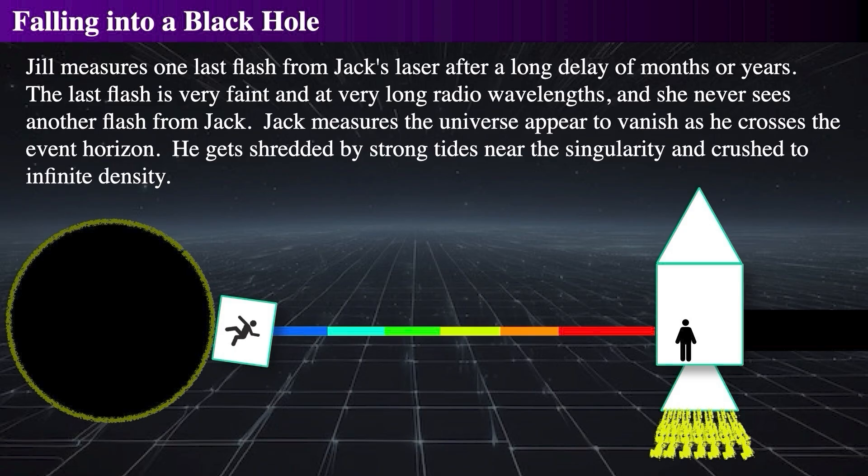In order to see his last transmission, Jill deployed a massive radio antenna array because the wavelength of the pulse had been stretched to tens or even hundreds of kilometers. After this one last blip, she never sees another flash from Jack.